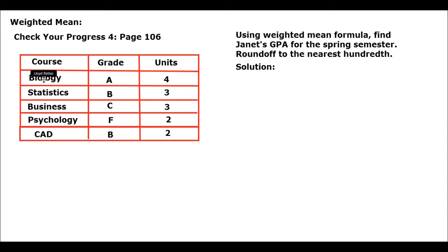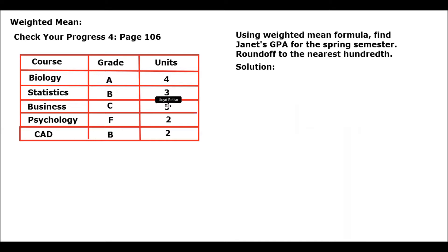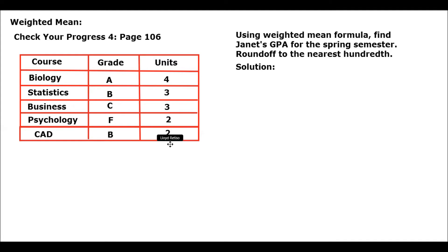The table shows the courses: Biology, Statistics, Business, Psychology, and CAD. The grade for Biology is A and the units is 4. For Statistics the grade is B and the units is 3. For Business the grade is C and the units is 3. Psychology is F and the units is 2, and CAD is B and the units is 2.